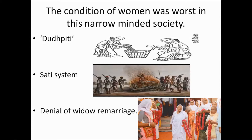The second evil was the Sati system — the burning of a woman on her husband's funeral fire. Here a woman is being burned on the funeral of her husband. The third evil was the denial of widow remarriage, where widows were not allowed to marry again.